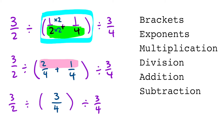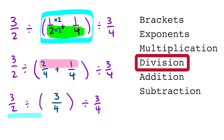This question now has 2 operations left. They are both divisions, and so we're going to work from left to right. The next piece that we're going to do is 3 over 2 divided by 3 over 4.